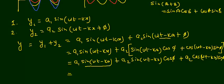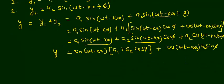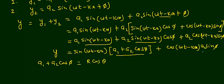In the first two terms I can take sin(ωt − kx) as common, giving sin(ωt − kx) · (a₁ + a₂ cos φ), plus the remaining term cos(ωt − kx) · a₂ sin φ. Now I substitute: let a₁ + a₂ cos φ = r cos θ, and a₂ sin φ = r sin θ. Here r is the amplitude of the resultant wave and θ is the phase difference of the resultant wave with the first wave.